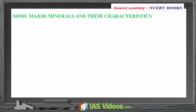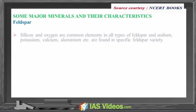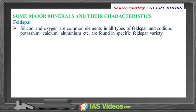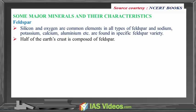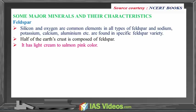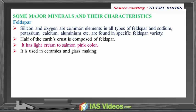Some major minerals and their characteristics. Feldspar: silicon and oxygen are common elements in all types of feldspar, and sodium, potassium, calcium, aluminum etc. are found in specific feldspar varieties. Half of the earth's crust is composed of feldspar. It has a light cream to salmon pink color. It is used in ceramics and glass making.